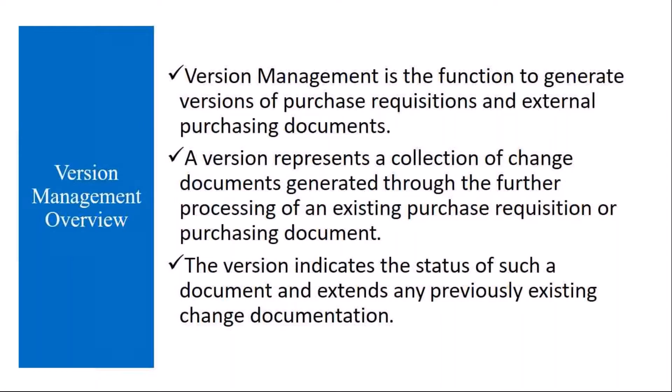Version management is the function to generate versions of purchase requisitions and external purchasing documents. In purchasing, once you create a purchase requisition or purchase order, you may be asked to change some data. For example, you created a purchase order for 100 quantity, then the vendor says he can deliver only 50, so you are asked to change the purchase order.